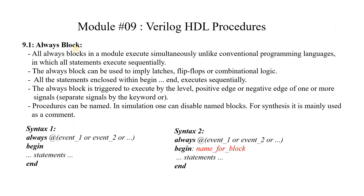Now let's get started. The first procedural block in Verilog is the always block. An always block in a module executes simultaneously, unlike conventional programming languages in which all statements execute sequentially. If we have a Verilog file with more than one always block, all always blocks will execute concurrently — there is no dependency of one always block on another. Whenever a change happens in the sensitivity list, these always blocks are going to be executed irrespective of any dependency.